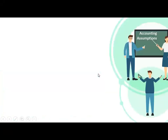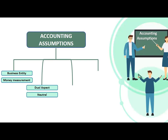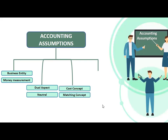There are basically four main assumptions or four categories: business entity, dual aspects, neutral, cost concept, matching concept, and going concern concept.